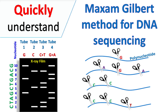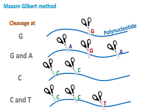Let's talk about the Maxim-Gilbert method of DNA sequencing. This method is based on the sequencing of nucleotides by cleavage at specific sites. These specific sites include cleavage at guanine, guanine and adenine, cytosine, and cytosine and thymine.